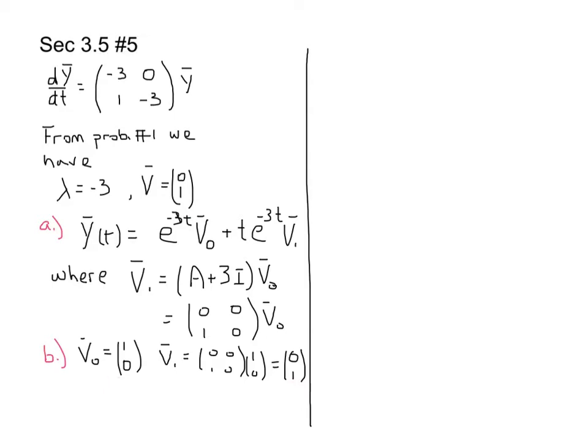So, here's our v0, and here's our v1. And then, we go ahead and write our particular solution as y(t) equals e to the minus 3t times (1, 0), plus t e to the minus 3t times (0, 1).